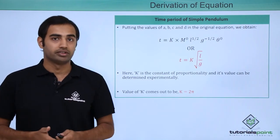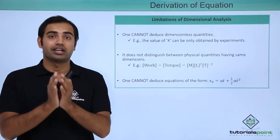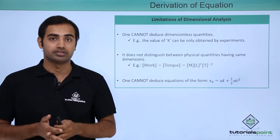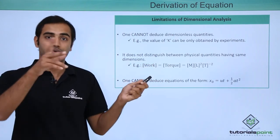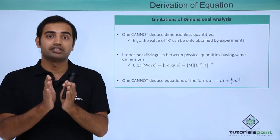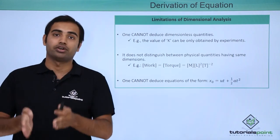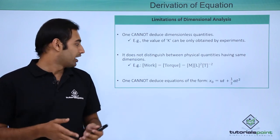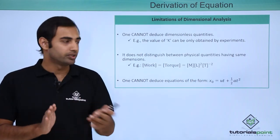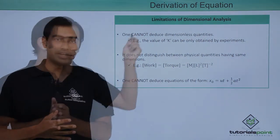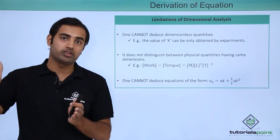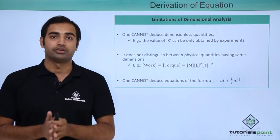Let's talk about some limitations of this method. First, the value of k or other dimensionless constants cannot be obtained by this method. Next, it does not distinguish between physical quantities having the same dimensions. For example, the dimensions of work and the dimensions of torque — two entirely different physical quantities — are exactly the same: ML squared T raised to power minus 2. So these methods will not be able to distinguish between work and torque or any other two quantities having the same dimensions. Finally, one cannot deduce equations of the form x = ut + half at squared; in other words, one cannot deduce equations which have addition and subtraction signs, because this method fundamentally relies on proportionality of multiple dependencies — they are always multiplied to each other.